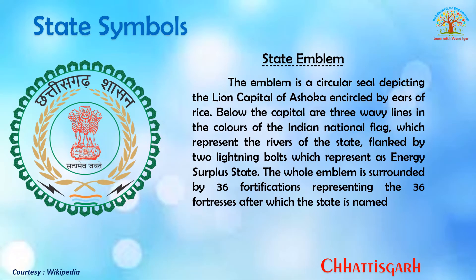The state emblem is a circular seal depicting the Lion Capital of Ashoka, encircled by ears of rice. Below the capital are three wavy lines in the colors of the Indian national flag, representing the rivers of the state. These are flanked by two lightning bolts representing Chhattisgarh as an energy-surplus state. The whole emblem is surrounded by 36 fortifications representing the 36 fortresses after which the state is named.